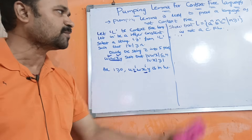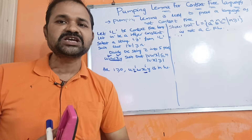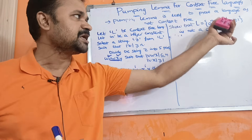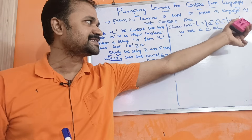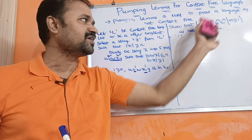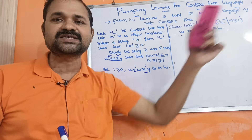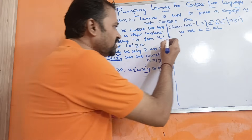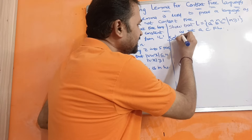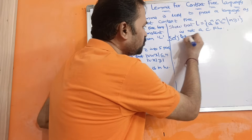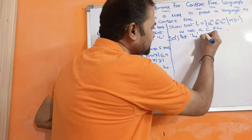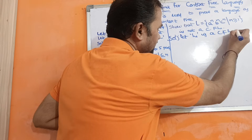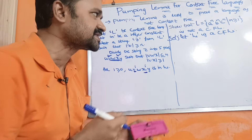Now let us solve the problem: show that L = {a^n b^n c^n | n ≥ 1} is not a context-free language. Initially we assume this language is a context-free language — let L be a context-free language.